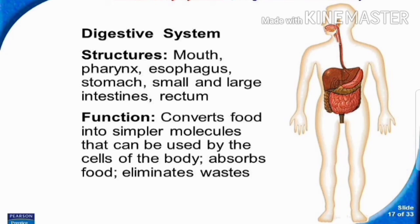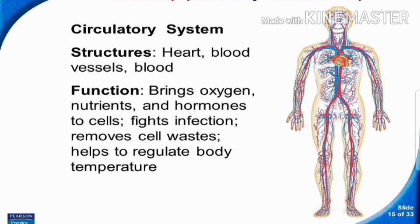Next is the digestive system. Its structure consists of the mouth, pharynx, esophagus, stomach, small and large intestines, and rectum. The function of the digestive system is to convert food into simple molecules that can be used by the cells of the body, absorb food, and eliminate waste. Whatever food we take in is digested using the digestive system.